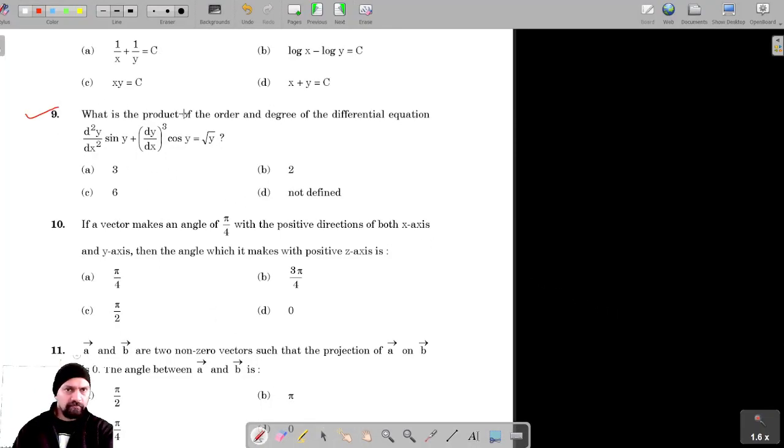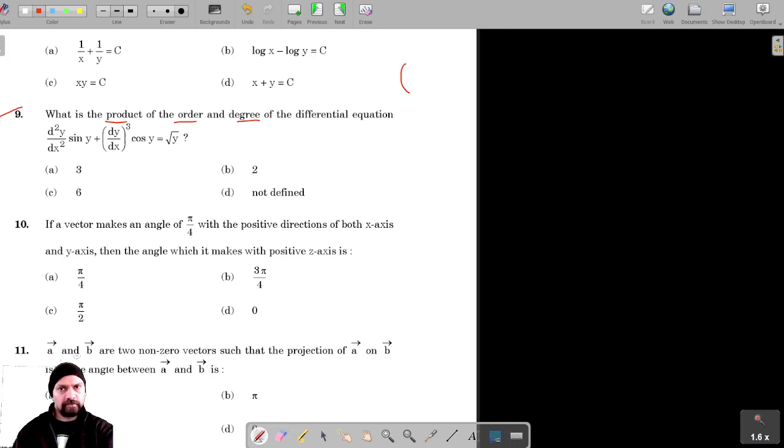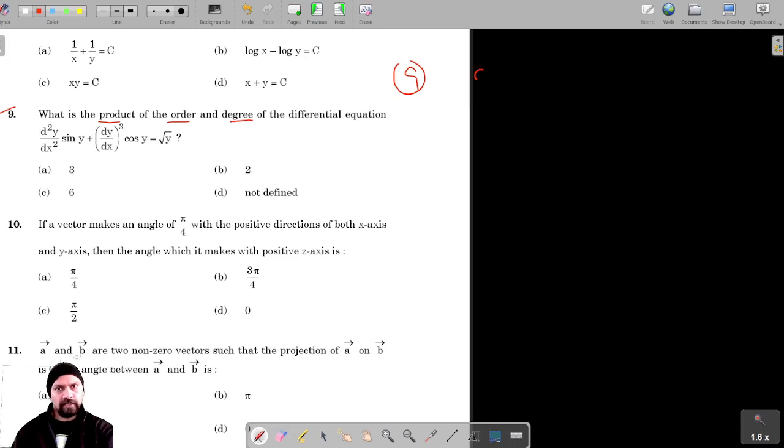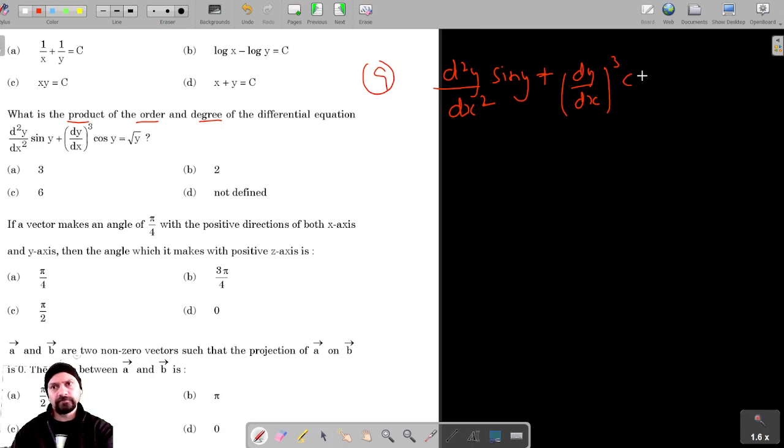For question number 9, we have to find the product of the order and degree of the differential equation. The differential equation is d²y/dx² × sin(y) + (dy/dx)³ × cos(y) = √π.